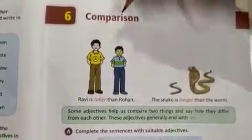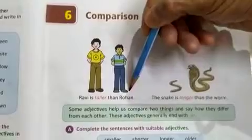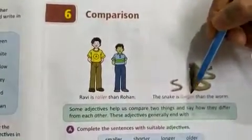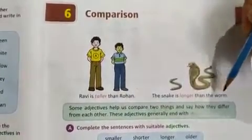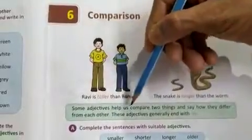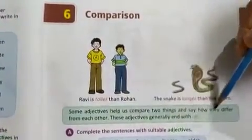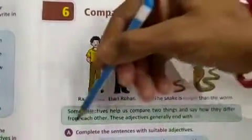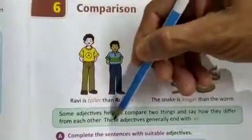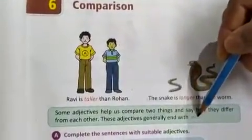Comparison. Ravi is taller than Roman. The snake is longer than the worm. Some adjectives help us compare two things and say how they differ from each other. These adjectives generally end with ER.